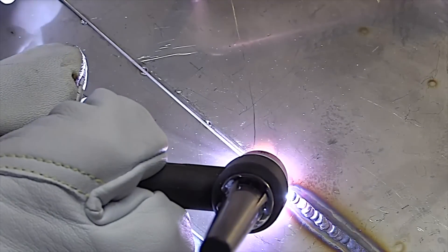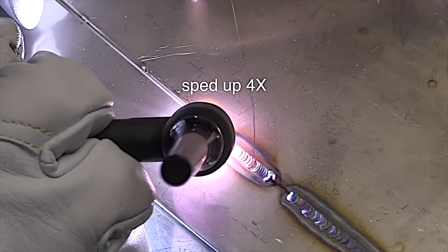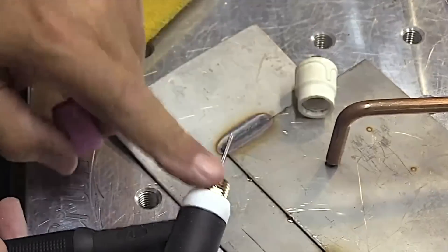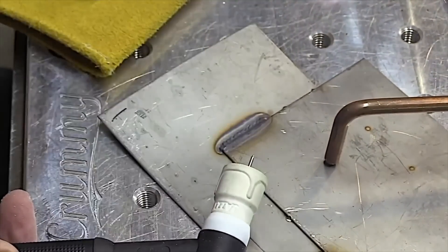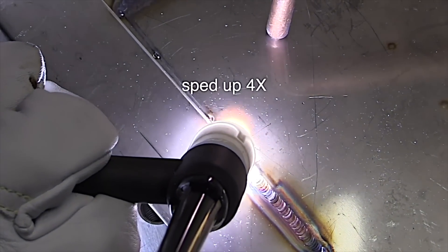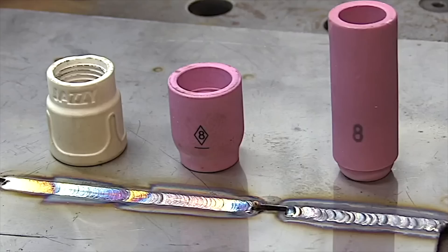Now here I'm using the same exact stick out with the same flow rate with the stubby gas lens. And it's like somebody flipped the switch on. Now all of a sudden it's cleaned up. Now if I put the Jazzy 10 on there with that secondary diffuser, I'm going to get a little bit better shielding. Not like night and day here but it's still even better. And if I went up to a number 12 it would improve a little bit more. It just depends on what you need and how much gas you want to use.